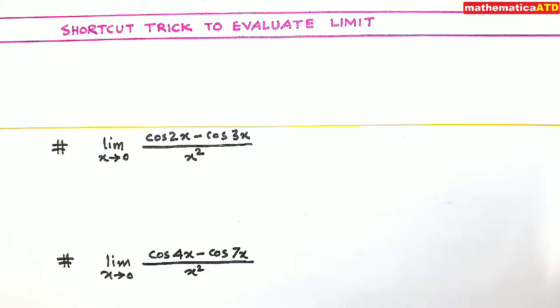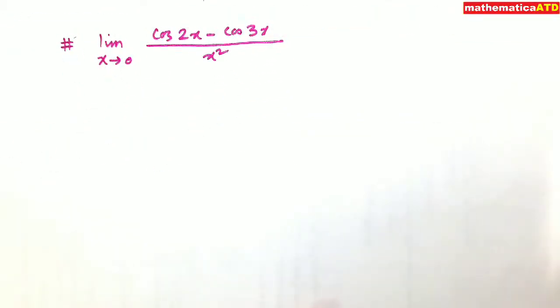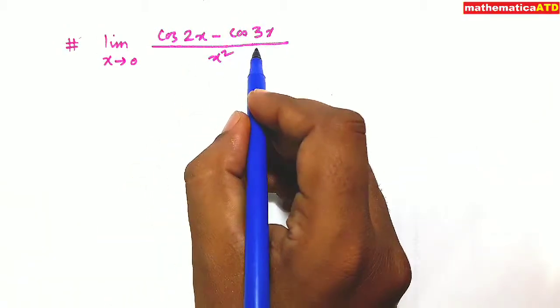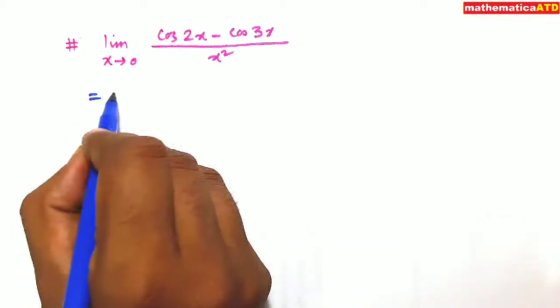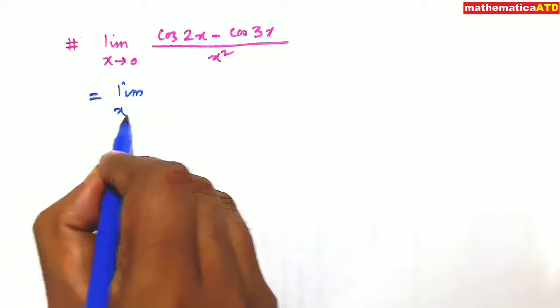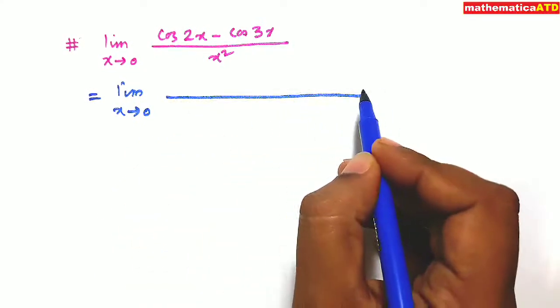Before that, I shall use the traditional method to find the limit of this given function. This is limit x tends to 0, cos 2x minus cos 3x upon x square. We shall use this one. This is the traditional method. I am showing how much time it is actually taking.